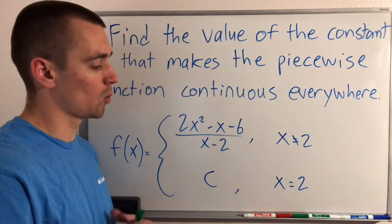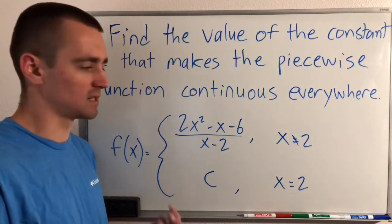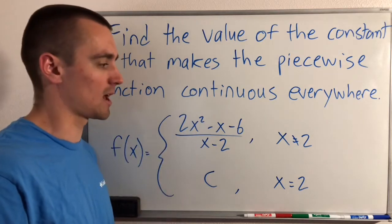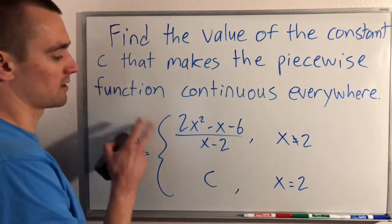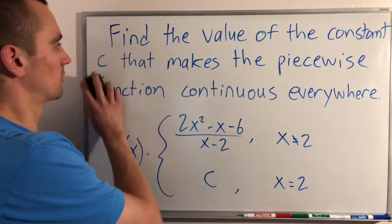So what we want to think about is what piece is basically missing from this rational function at x equals 2. So let's first of all, just think about this function, this rational function by itself.